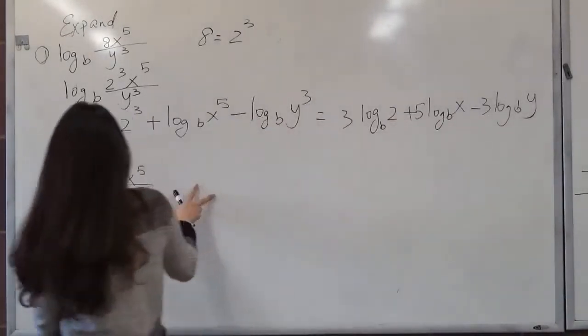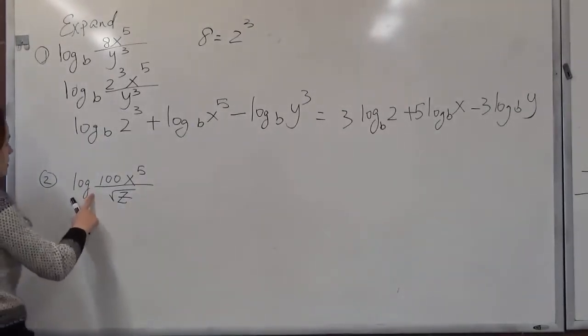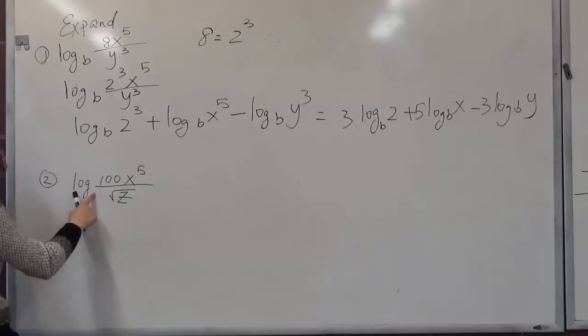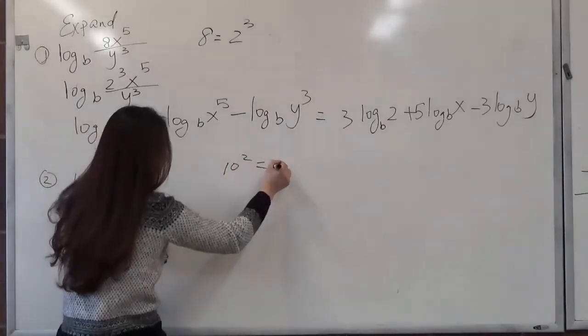Now let's go to the second one. We know there is no base. That means the base is 10. So we rewrite the 100. Here we know 10 to the second power is 100.